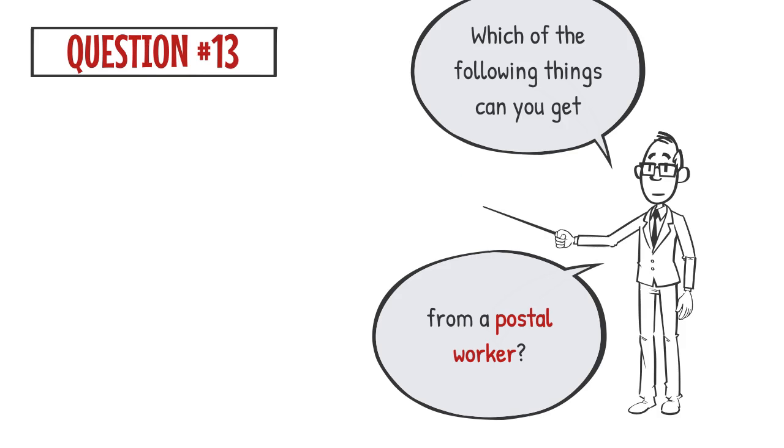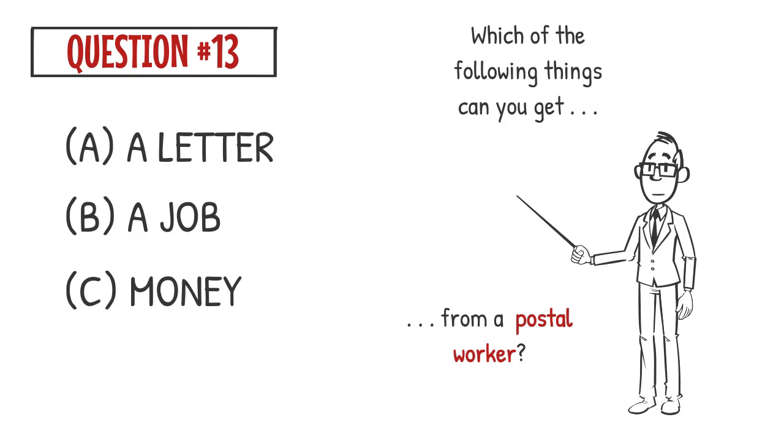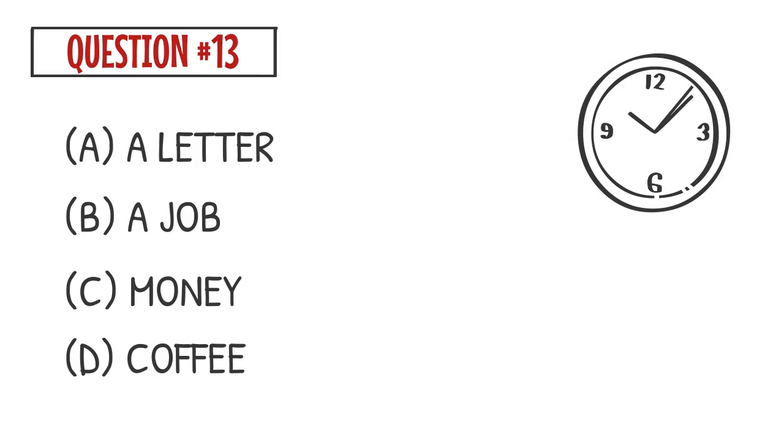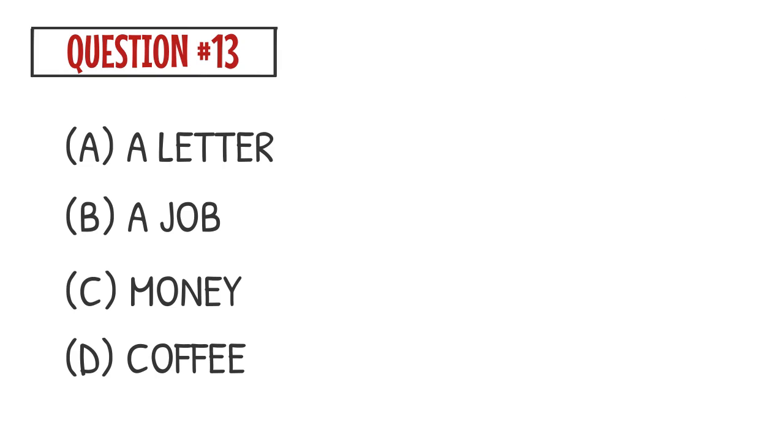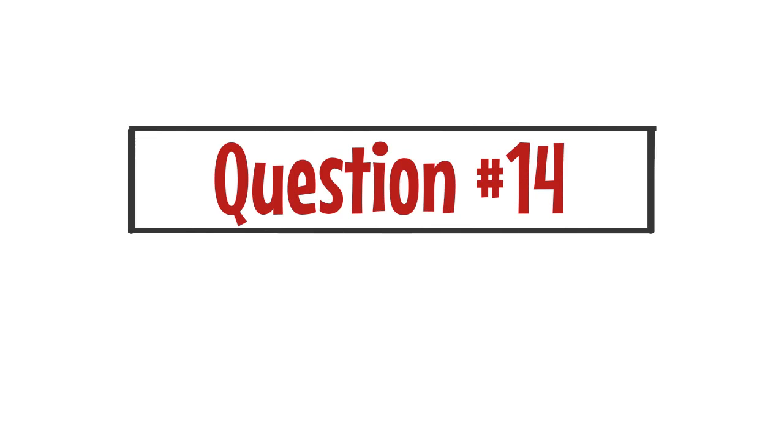Question number 13: Which of the following things can you get from a postal worker? A. A letter B. A job C. Money D. Coffee. The correct answer is A. You can get a letter from a postal worker.